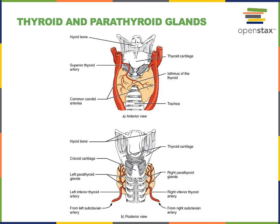TSH both stimulates the growth of the thyroid gland, as well as stimulating the production of thyroid hormones T3 and T4, which then have the effects of increasing the metabolic rate, which helps warm our body.